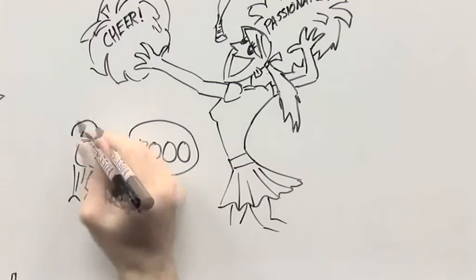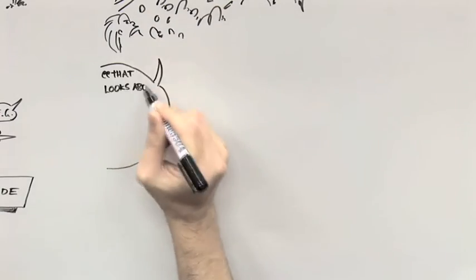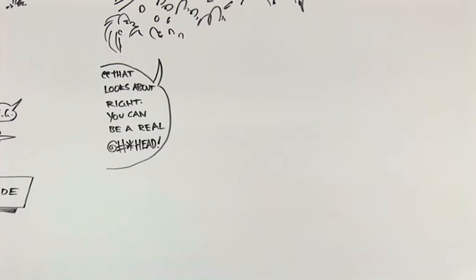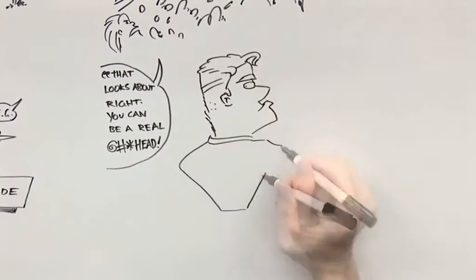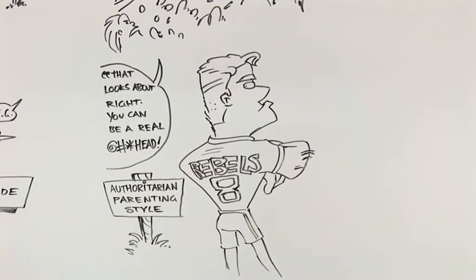But supporters often criticize their teams too. One leader told me that when he showed his wife his first brutal feedback, she said, that looks about right. You can be a real dickhead. Another told me that a major turning point in his journey was when his teenage kids rebelled against his authoritarian parenting style.